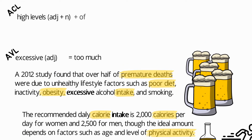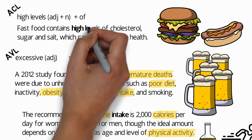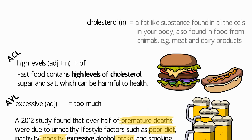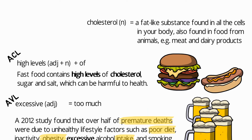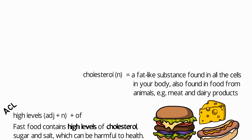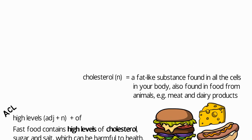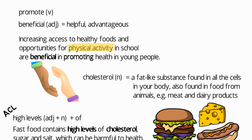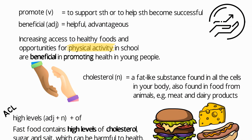Another collocation from the ACL is 'high levels,' an adjective and noun collocation usually followed by 'of.' For example: 'Fast food contains high levels of cholesterol, sugar, and salt, which can be harmful to health.' Cholesterol is a fat-like substance found in your body's cells and also common in animal-based foods like meat and dairy products. The problem arises when you consume too much of it. Let's finish with two positive words: 'promote' and 'beneficial.' For example: 'Increasing access to healthy foods and opportunities for physical activity in school are beneficial in promoting health in young people.' Beneficial means helpful or advantageous; promote means to support something or help it become successful.